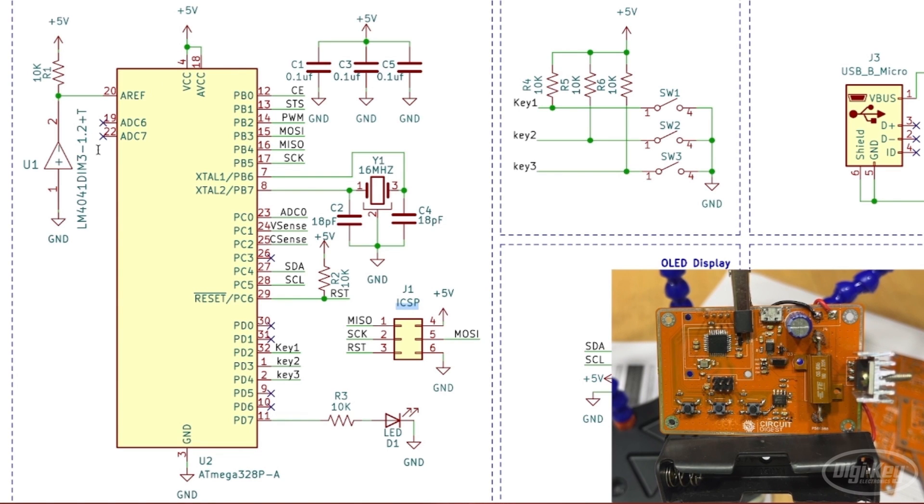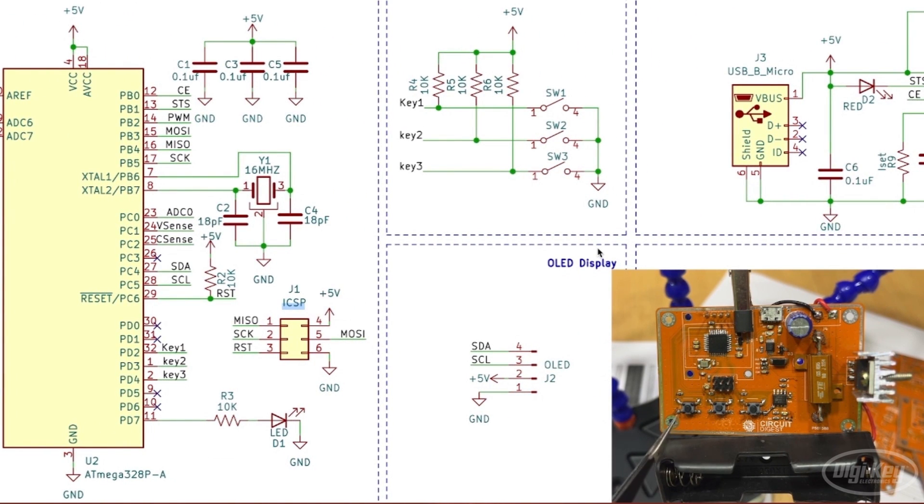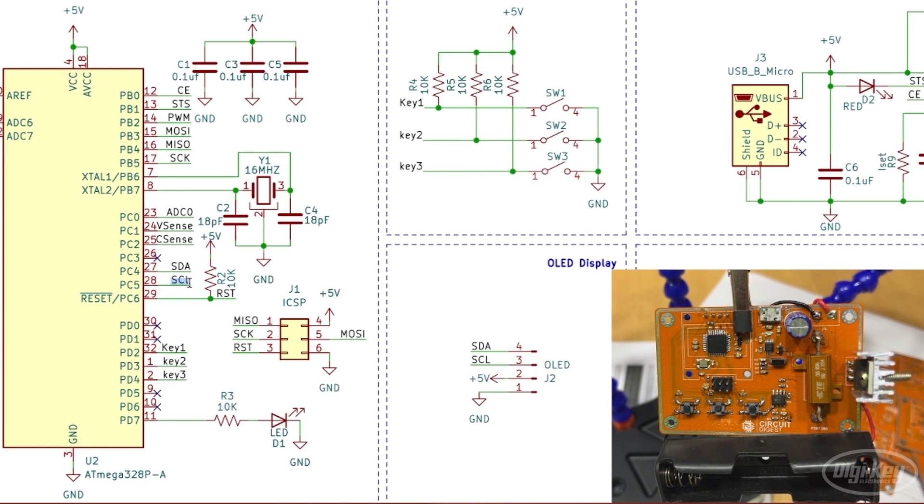Moving on we have the switches and the display side. You can see three switches over here connected to the microcontroller. Basically what we'll be doing is we'll be using three modes on our discharging device: one is to charge the cell, another is to discharge the cell, and the third one is to check the capacity of the cell. We also had an OLED display which we just removed which speaks with these SDA and SCL lines to our microcontroller over here. You can see the SDA and SCL connected here.